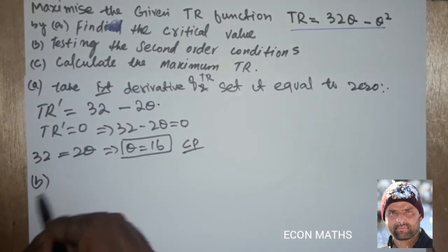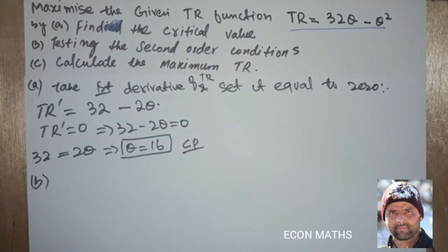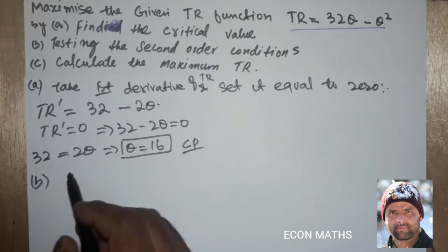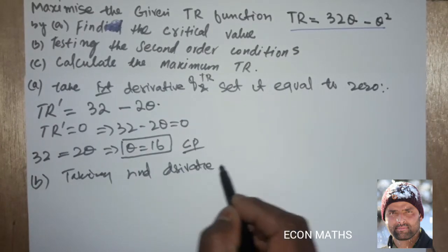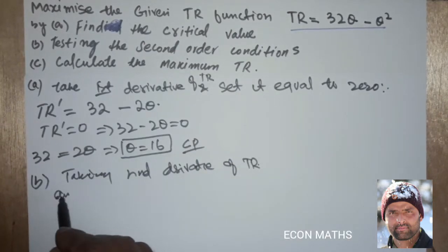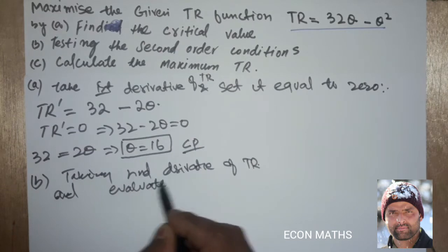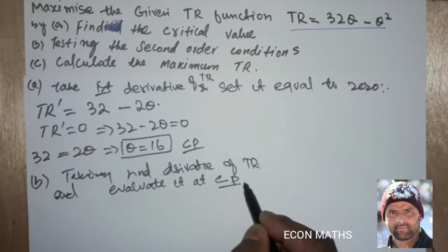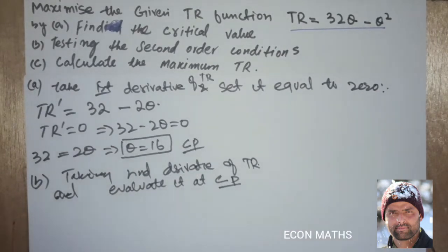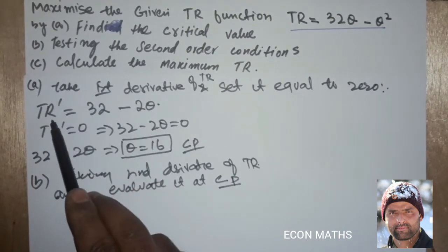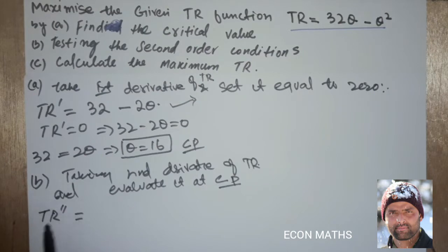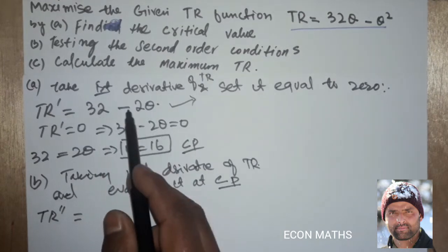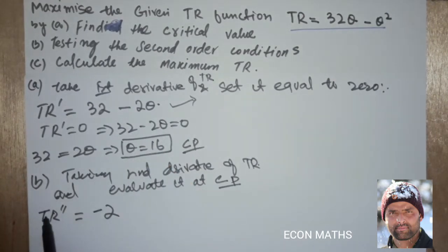Now the second part: test the second order condition. To test the second order condition, we take the second derivative of the total revenue function and evaluate it at the critical point. Since the first derivative is 32 minus 2Q, we differentiate again to get the second derivative. TR double prime: the derivative of 32 is zero, and the derivative of minus 2Q is minus 2. So the second derivative is minus 2.